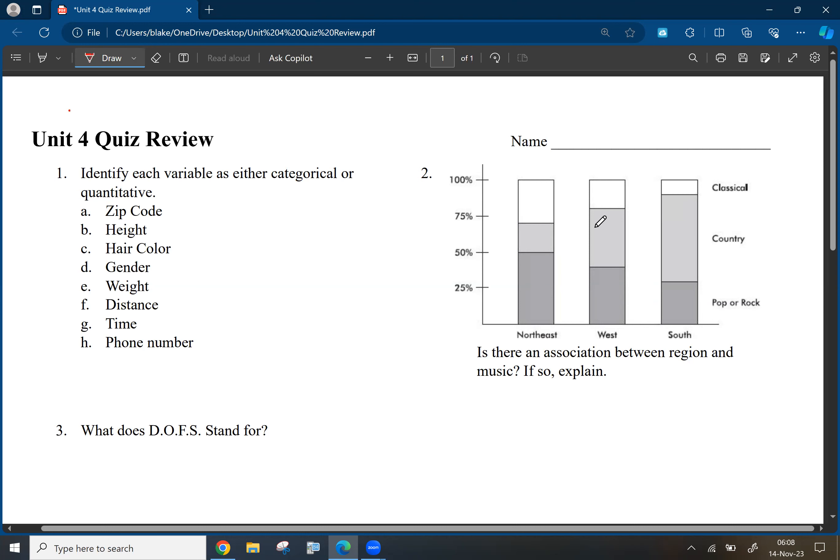So zip code, zip code is a numerical value, but it doesn't quantify anything. It doesn't measure anything. It's just kind of a numerical label for an area. So it's more of that classification type. So it is categorical.